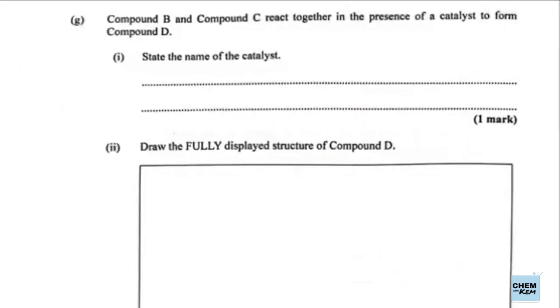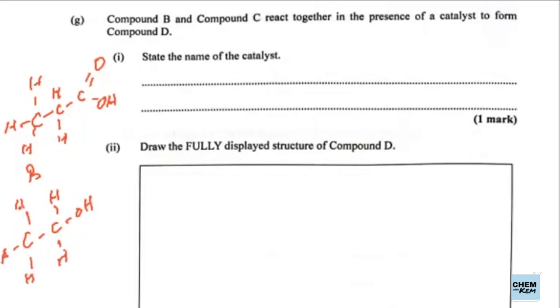Part G: Compound B and compound C react together in the presence of a catalyst to form compound E. State the name of the catalyst. Just a reminder, compound B is propanoic acid, and compound C is ethanol. The name of the catalyst? We'd use sulfuric acid. Sulfuric acid is our catalyst.